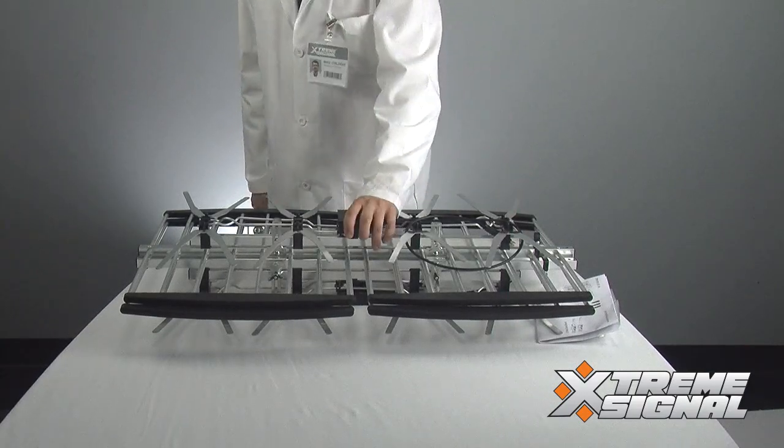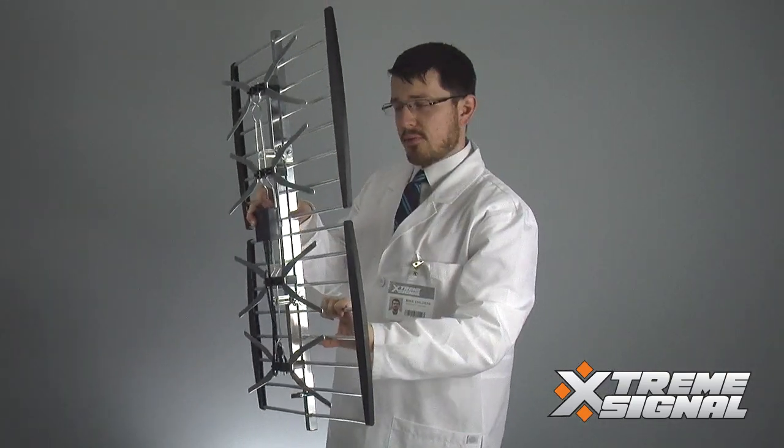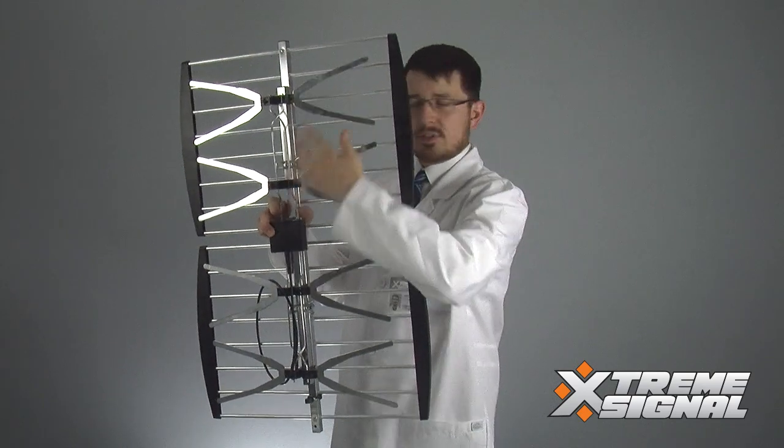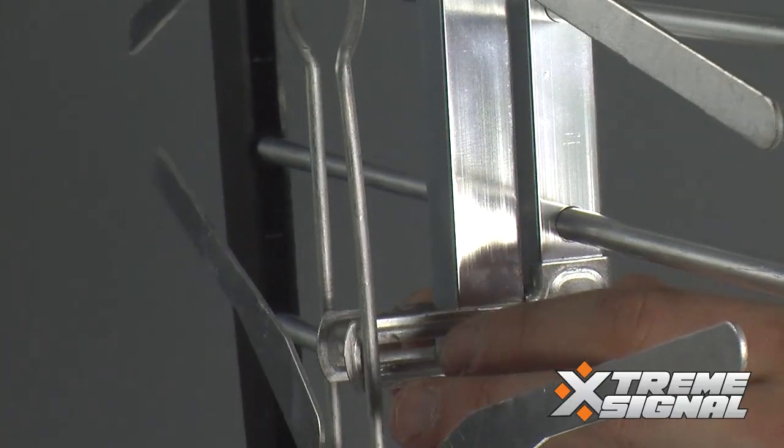Next step, let's take the antennas. We're going to want to separate the reflector, this back part with these bars, from the front side which is the elements. You can do that by loosening the wing nuts on either side of this antenna.